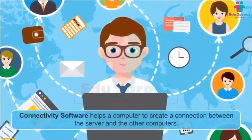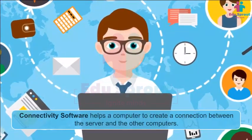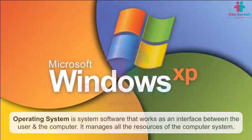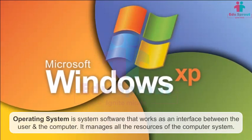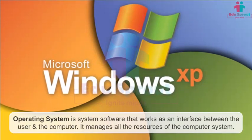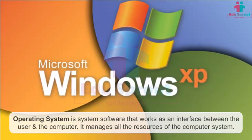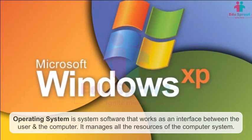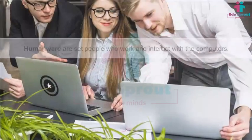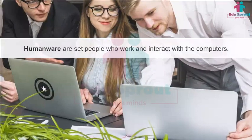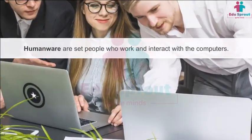Connectivity software helps a computer create a connection between the server and other computers. The operating system is a system software that works as an interface between the user and the computer; it manages all the resources of the computer system, like Windows 8, XP, etc. Humanware refers to the set of people who work and interact with the computers.